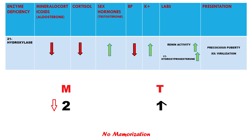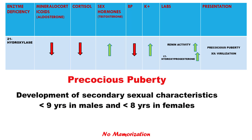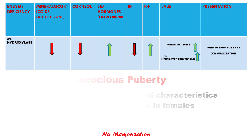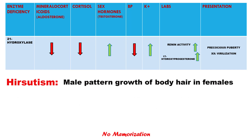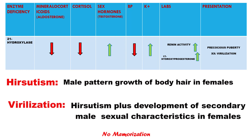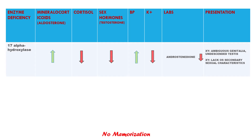Now the clinical presentation. As sex hormones go up, there will be precocious puberty in males and females. Precocious puberty is the development of secondary sexual characteristics below 9 years in males and 8 years in females. There will also be virilization in females. Hirsutism is the male pattern growth of body hair in females. Virilization is hirsutism plus the development of secondary male sexual characteristics in females, such as frontal balding, clitoromegaly, or deep voice.